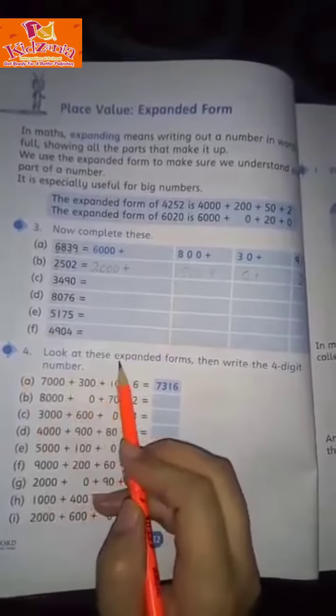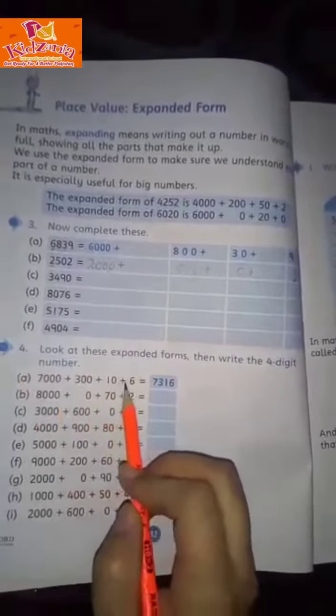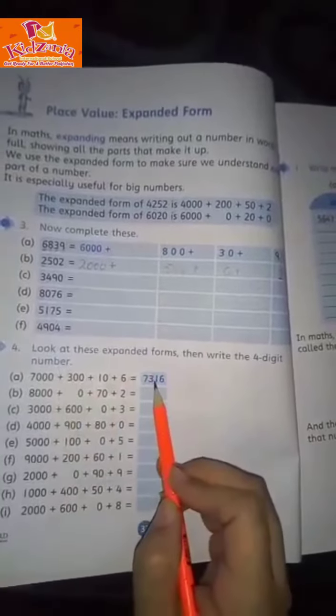Question number 4: Look at this expanded form, then write its 4-digit number.